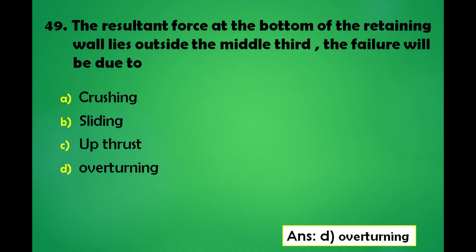The resultant force at the bottom of a retaining wall lies outside the middle third. The failure will be due to: a) crushing, b) sliding, c) upthrust, d) overturning. The answer is: the failure will be due to overturning.